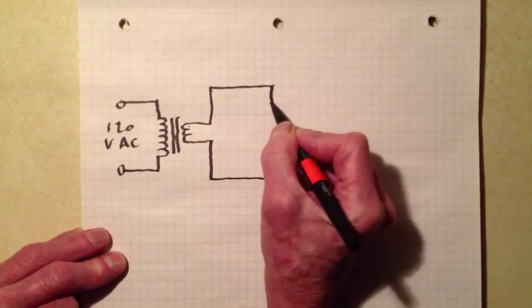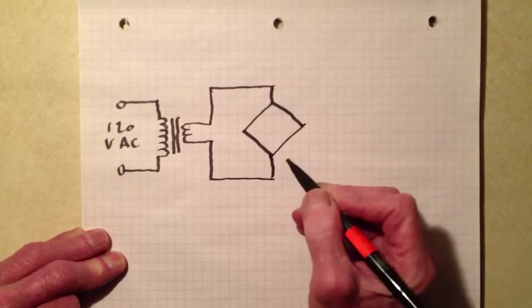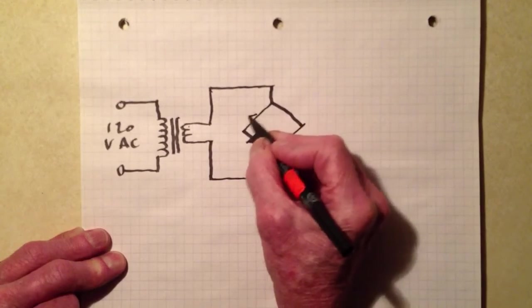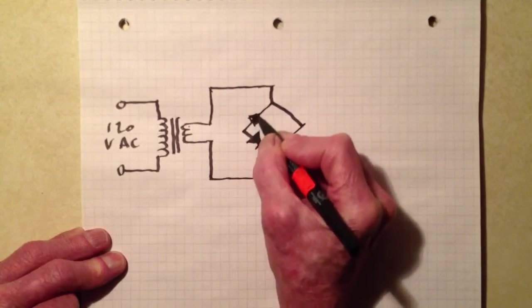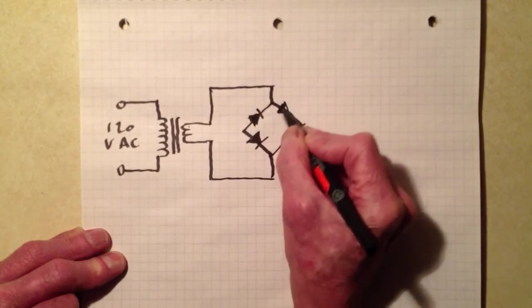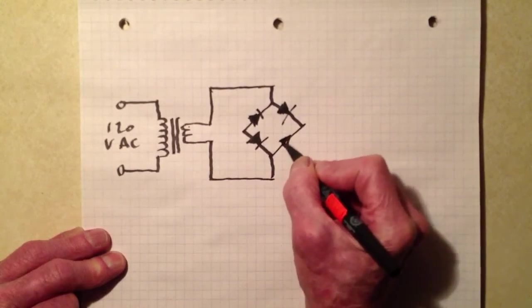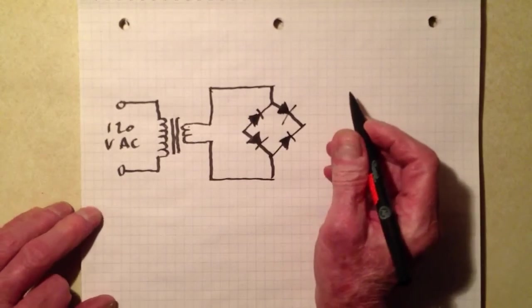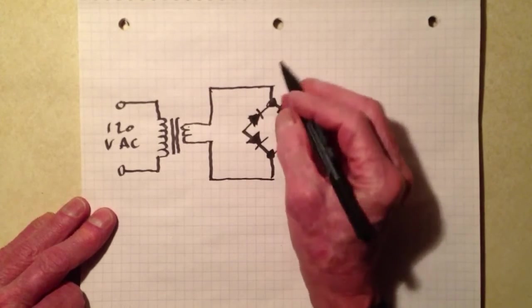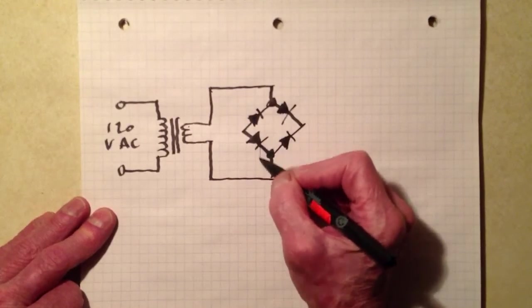But what we have then here is this bridge rectifier. That's four diodes, and note the way that they're connected, the polarities. It's very important that you pay attention to that and you get all of these diodes connected in the proper polarity. If you connect any of them backwards, you're not going to end up with a full wave power supply. You're going to end up with something else. Maybe even burned out diodes.